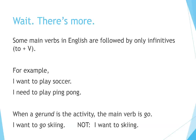There's more. Some main verbs in English are followed by only infinitives — 'to' plus verb. For example: I want to play soccer. When a gerund is the activity, the main verb is 'go': I want to go skiing — not 'I want to skiing.' That's incorrect.